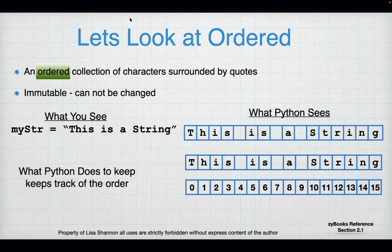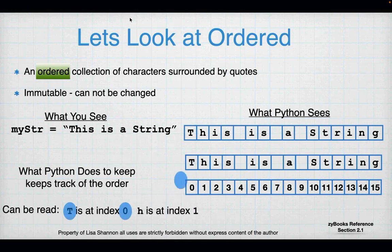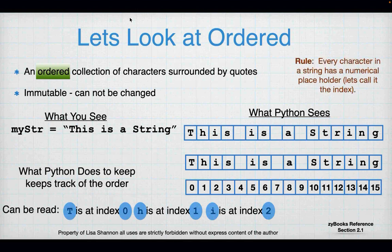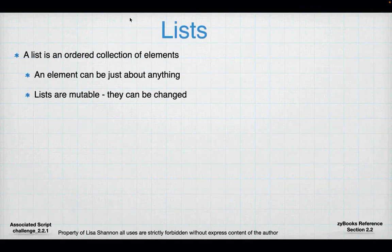My string at index zero is the value of T. My string at index one is the value of H, and so forth. Python keeps track of the order using those numbers. T is at index zero, H is at index one, I is at index two. That's just a way to read it when you're looking through your code and trying to understand what's happening. Every string has a numerical placeholder — it's called an index.